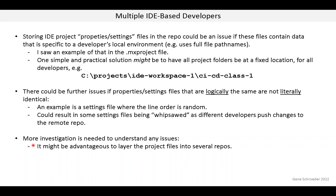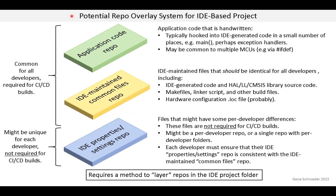One thing that occurred to me is it might be advantageous to layer the project files into several repos. In this diagram, I show a layering of files in the project folder, where each layer is potentially stored in a different Git repo. At the top layer, we have the application code that is handwritten or at least not supplied by the IDE — these files will be exactly the same for all developers. This code is typically hooked into IDE-generated code in a small number of places, for example main or maybe exception handlers. It may be that this software is common to multiple MCUs, with IFDEFs to handle different MCUs, and thus might appear in multiple IDE projects.